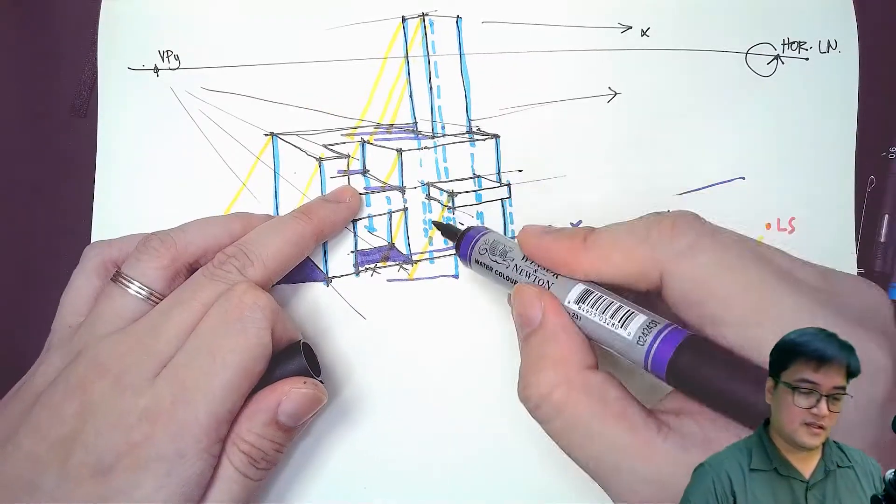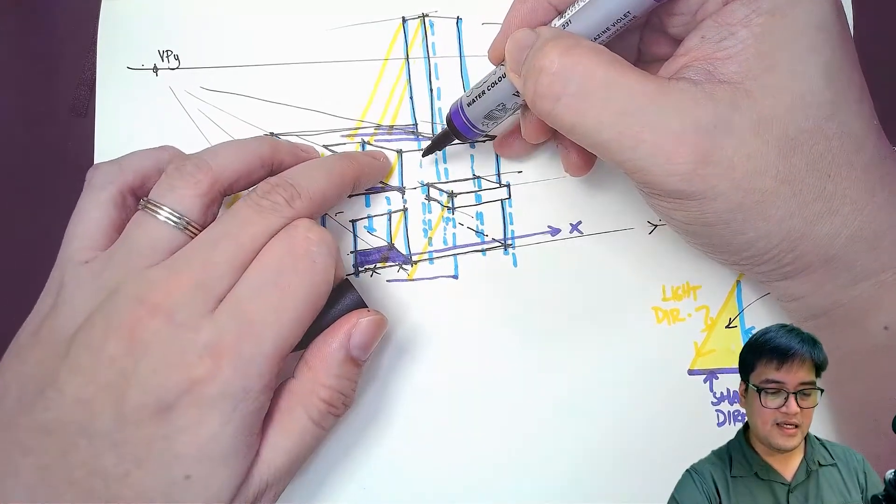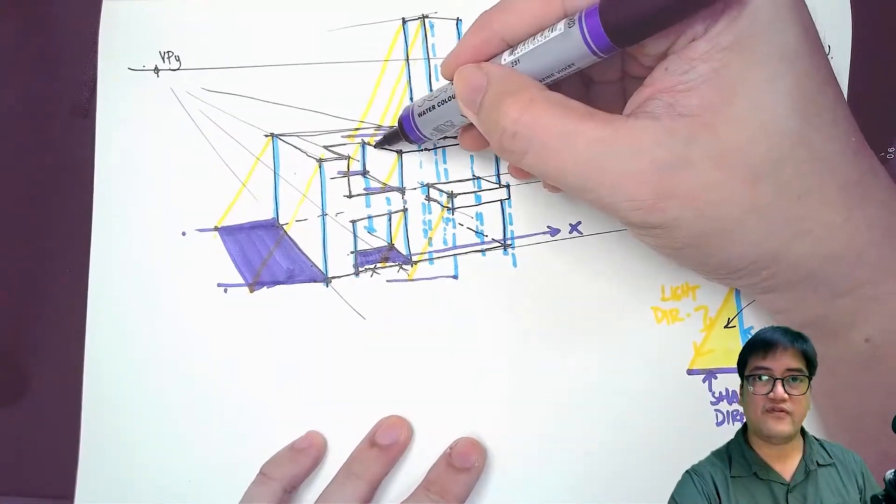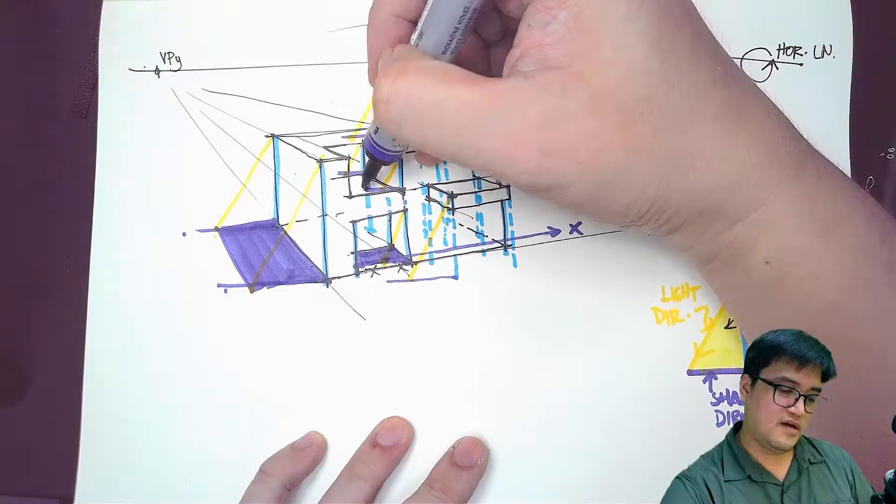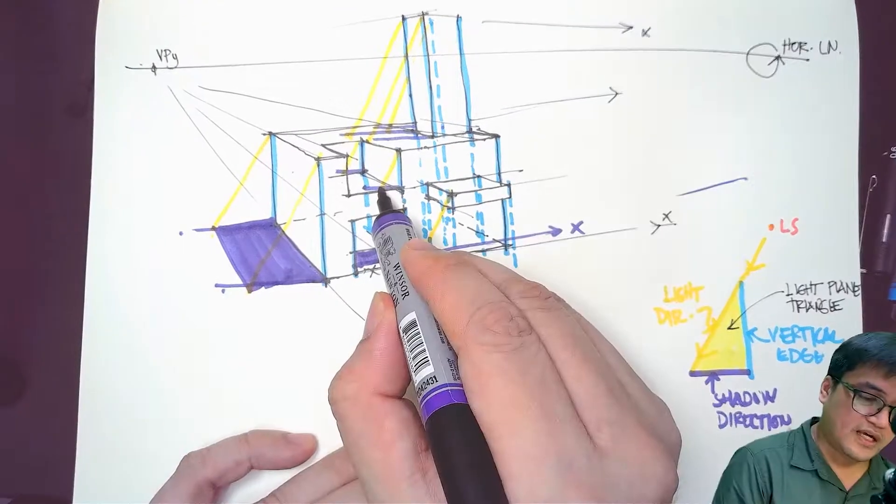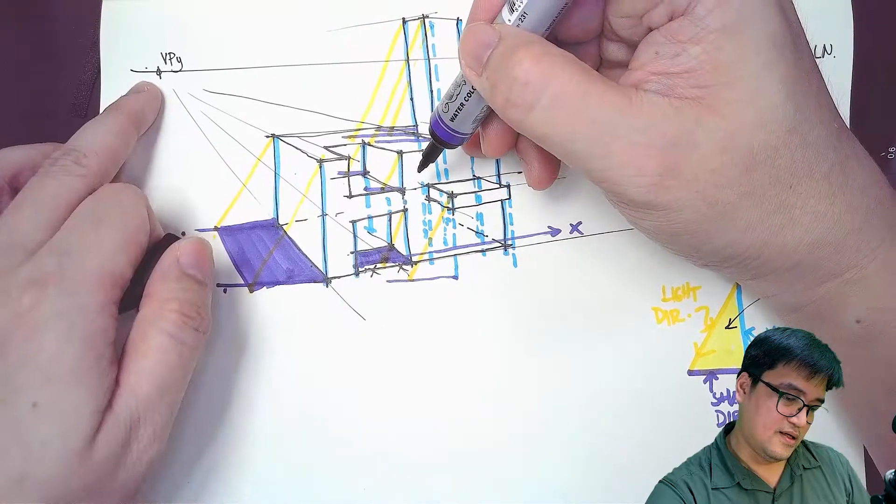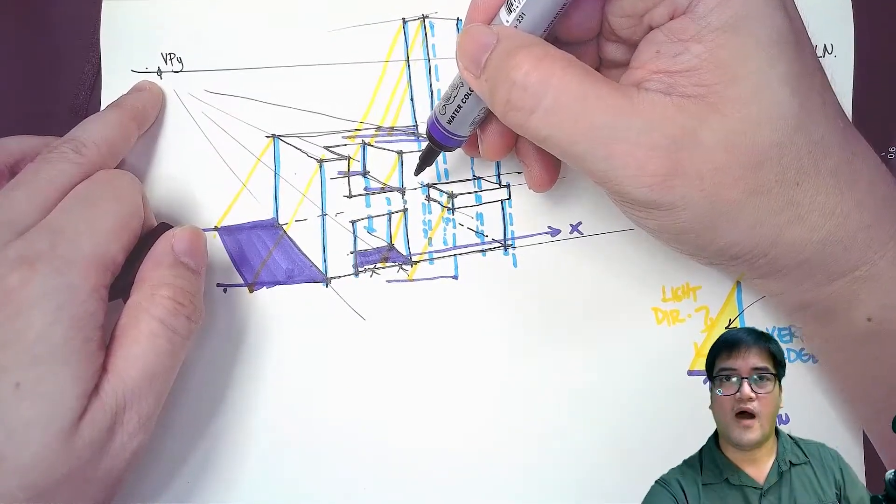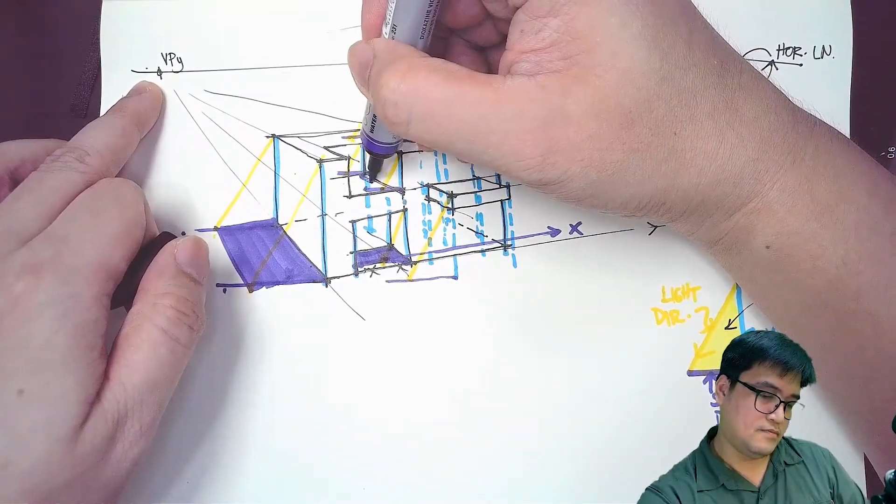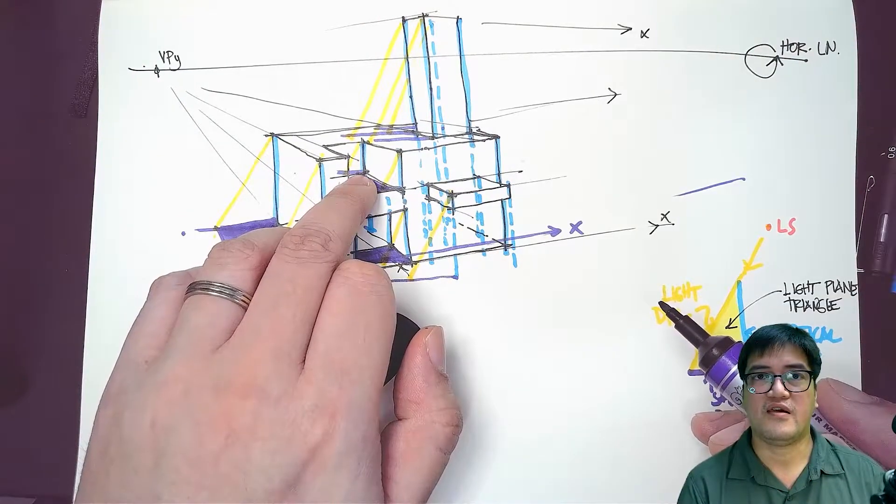Since it's going in, now I can cast the shadow casting for this edge starting from where it intersects with D. I started with this and it goes towards vanishing point Y. It hits the edge over here.